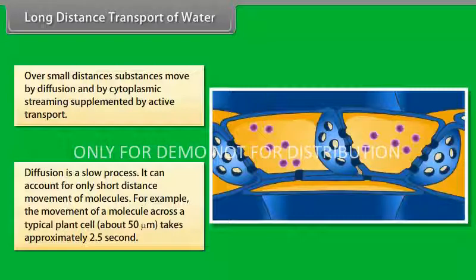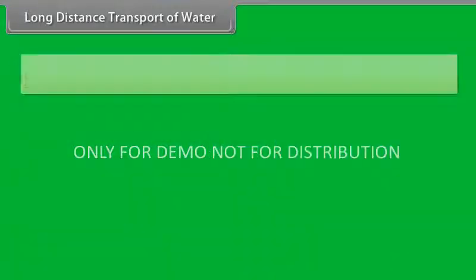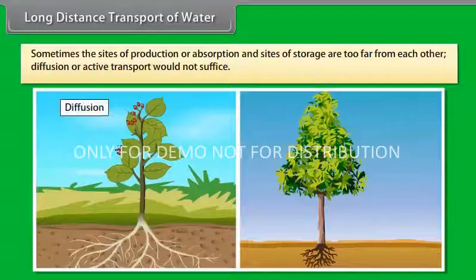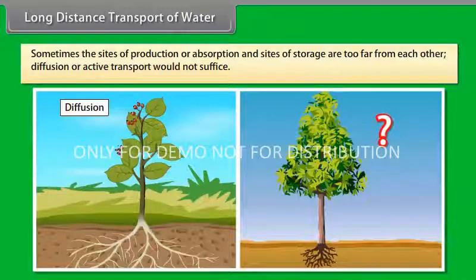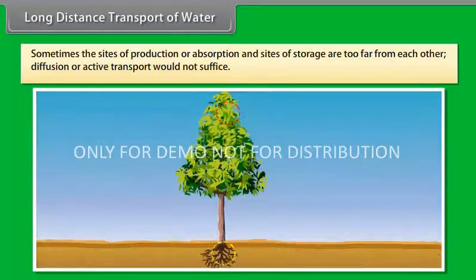Some trees are up to 50 feet tall. So think, how many years it would take for the movement of molecules over a distance of 25 to 30 feet within a plant by diffusion alone? Sometimes the sites of production or absorption and sites of storage are too far from each other.